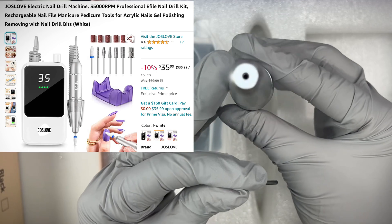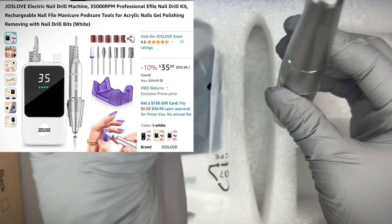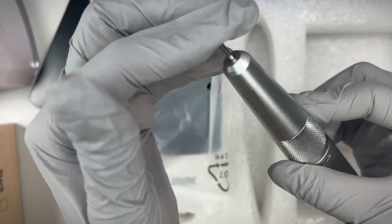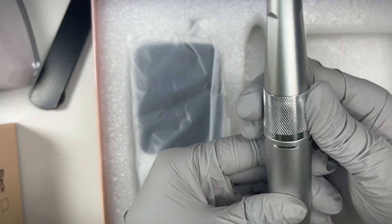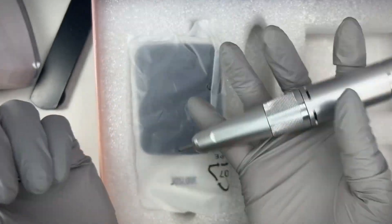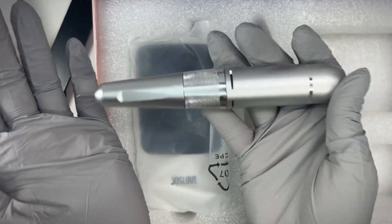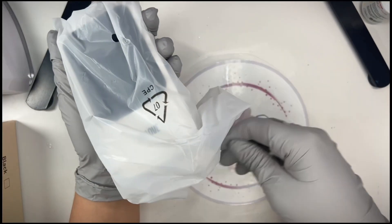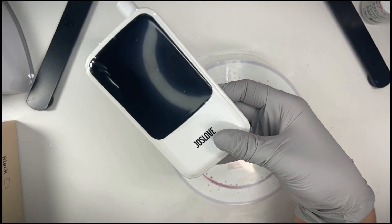By the way, you can find this drill on Amazon so I will make sure to link that in the description. And Walmart also carries Joss Love, so if I see that they carry it there I will make sure to link that as well. Okay, so here is the actual box. As you can see, I got the white color which I absolutely love.